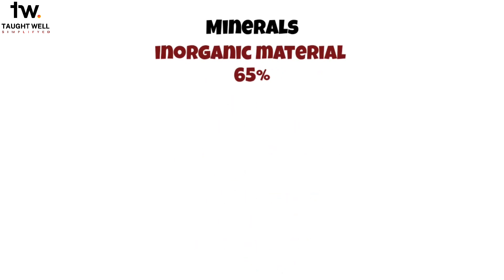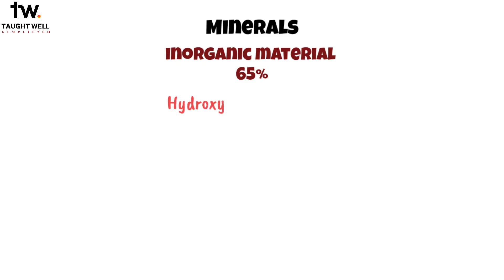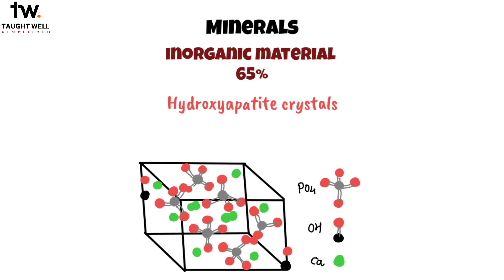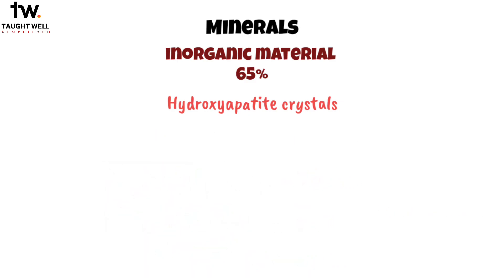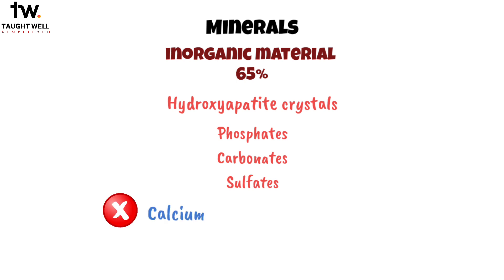The inorganic, meaning the non-living part of dentin, is mostly made up of hydroxyapatite crystals — the same kind of crystals you'd find in bone, cementum, and enamel. But the crystals in dentin are a lot smaller than the ones in enamel, and they're shaped like little plates. Dentin also has a bit of phosphates, carbonates, and sulfates. Its crystals don't have a lot of calcium, but they do have a lot of carbon, especially compared to enamel.